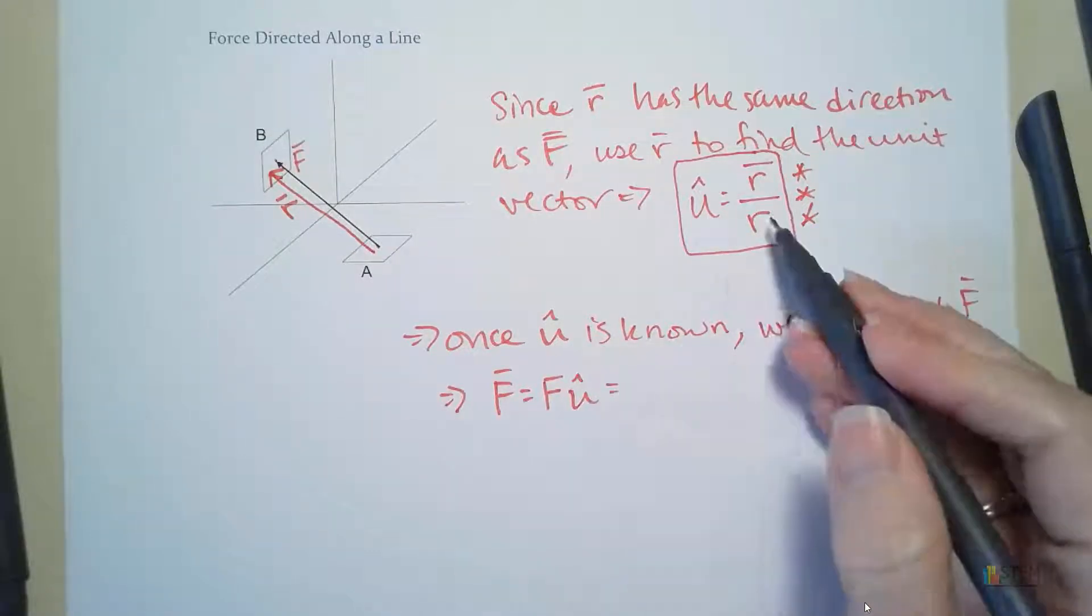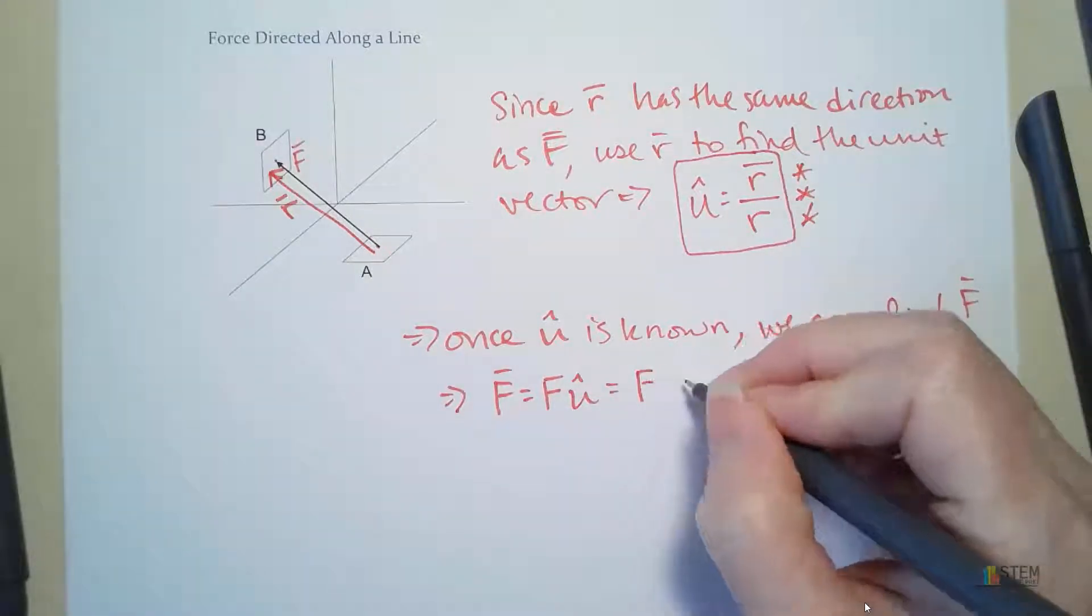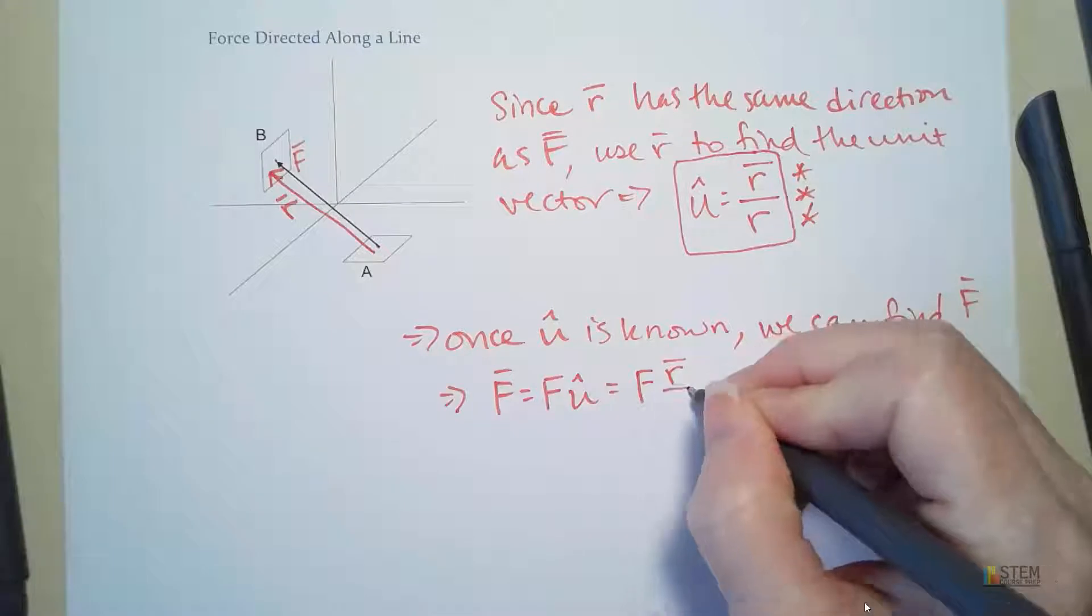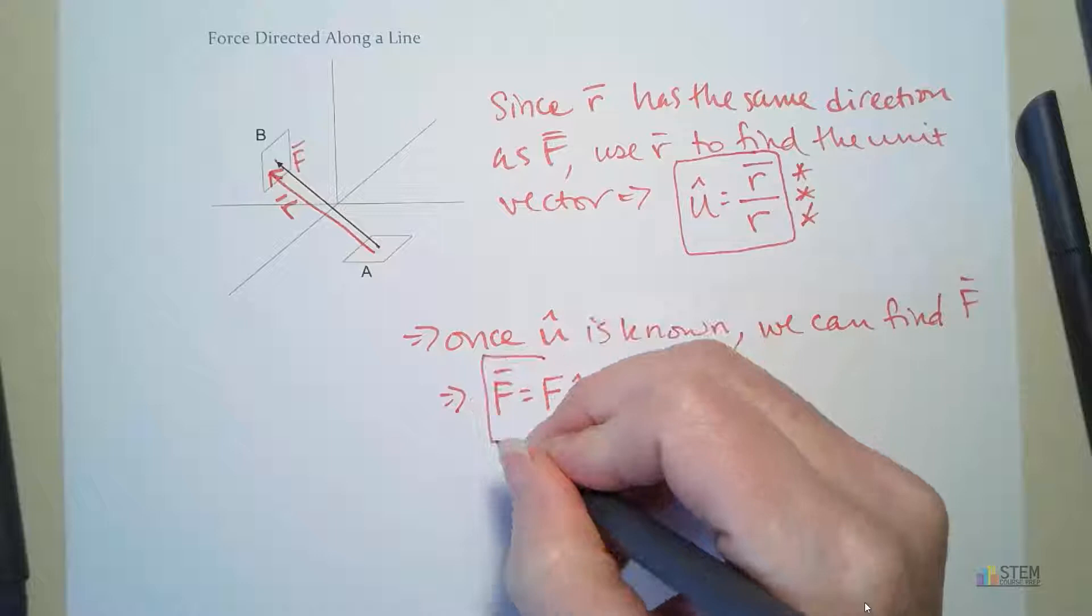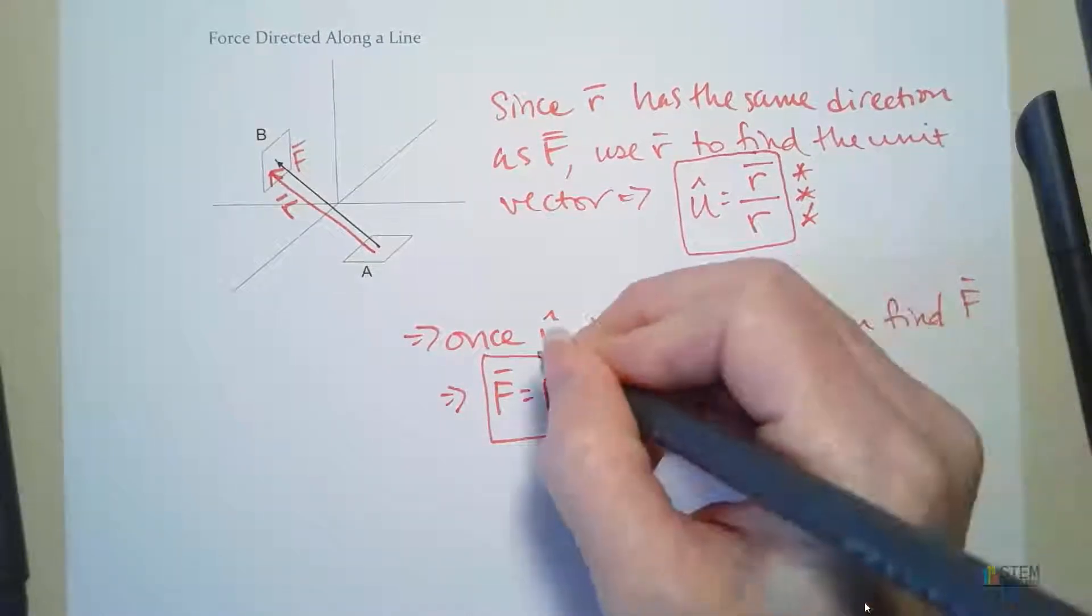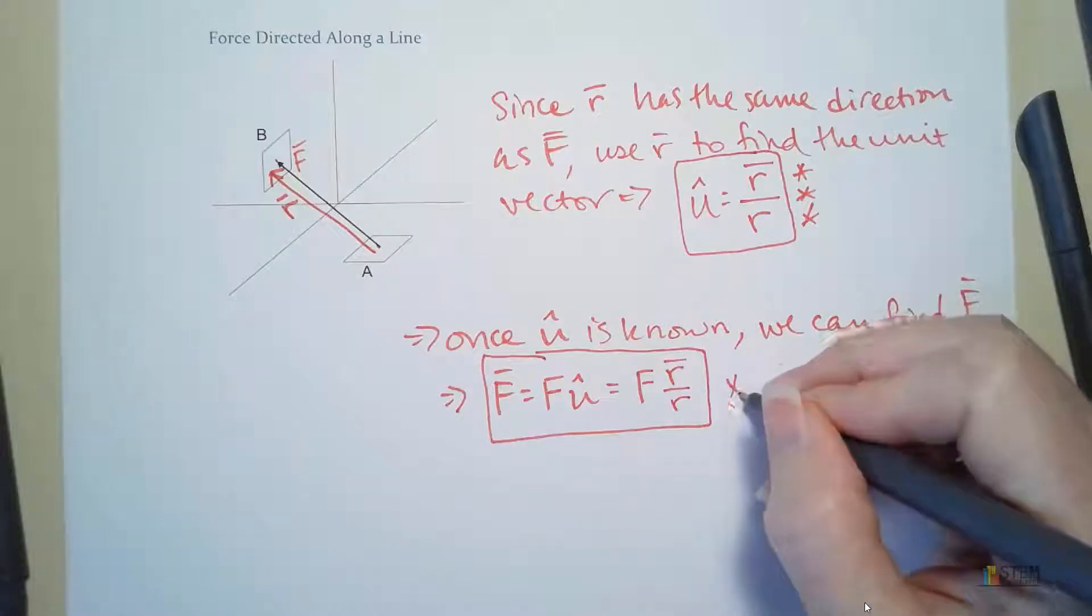So then if we extend that out and replace U with this, that means our force vector is going to be the magnitude of the force times the position vector over R. And that's how we're going to go about finding our force vector. So this is going to be important.